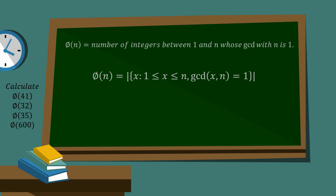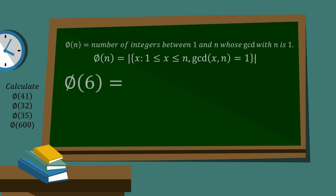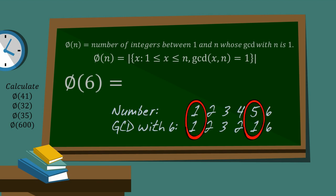So a simple example is phi of 6. We're concerned with the numbers between 1 and 6, so we write them down. Underneath, we just write the GCD of those numbers with the number 6, and you can see there's only 2 that have a GCD of 1, and so phi of 6 is equal to 2.